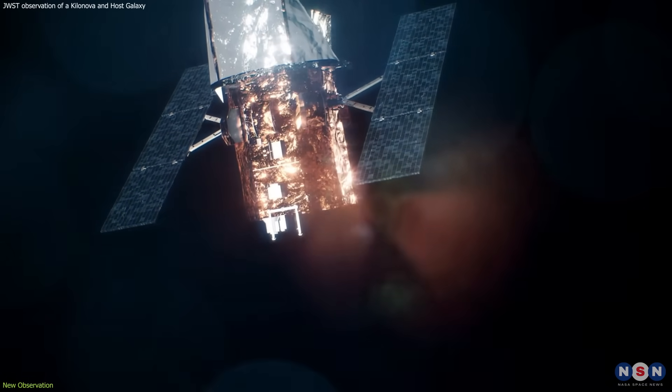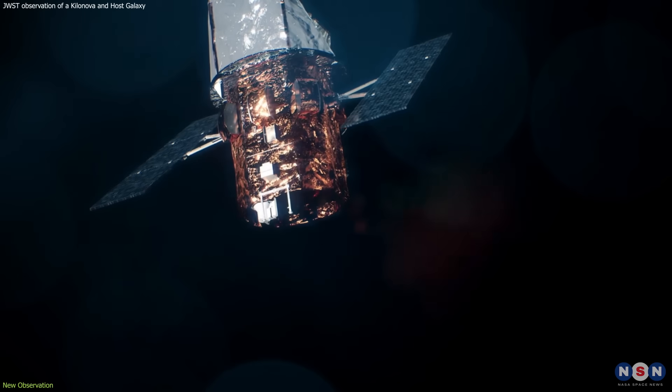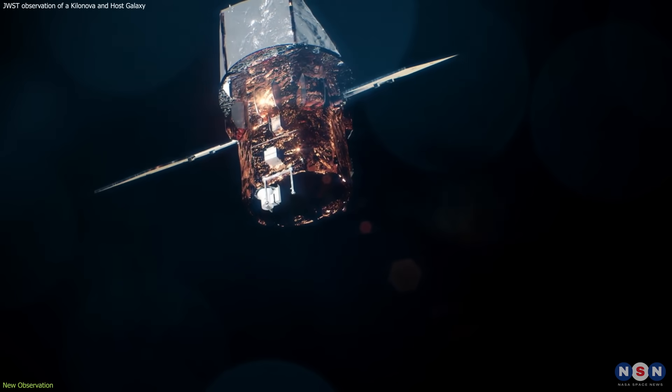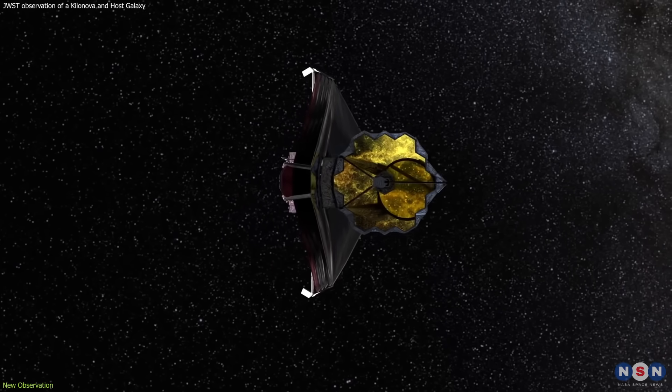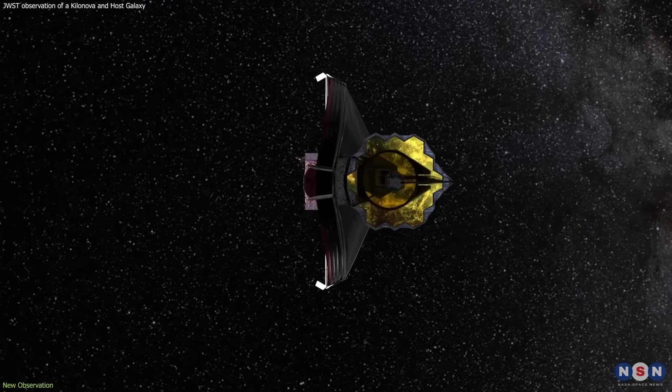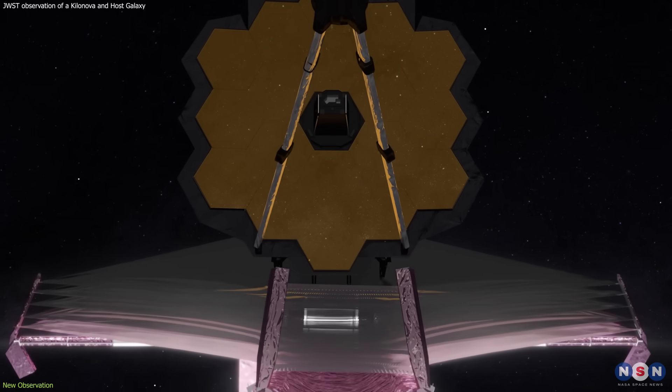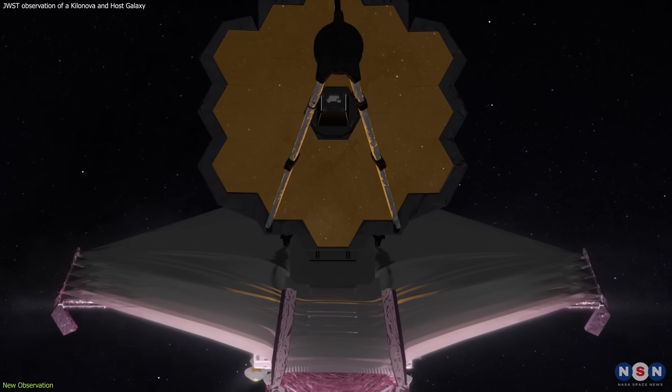But they are also very hard to observe because they are very faint and very fast. Luckily, Swift was able to pinpoint the location of this explosion quickly and alert other telescopes to follow up on it. One of these telescopes was the James Webb Space Telescope.